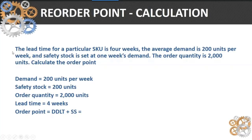Here's a simple reorder calculation. We've got 200 units per week, 200 units of safety stock, order quantity 2000, and a four-week lead time. So you can see that you could very easily create a spreadsheet that has all these parameters and automatically calculate the reorder point for each independent demand item.